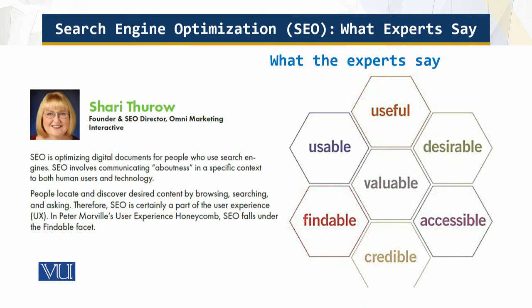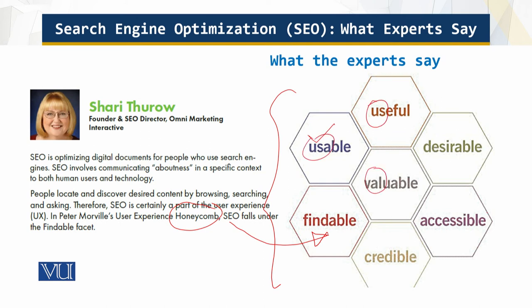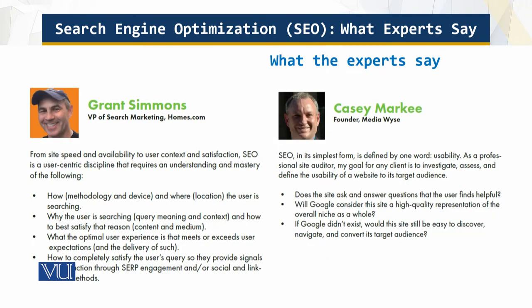Then we have this honeycomb framework. Search engine optimization finds its place in being findable — how findable it is. And you see there are a number of things: usable, useful, valuable. There are many "-ables" here — you can put more: findable, valuable, usable. So if all these things are covered, that is search engine optimization.